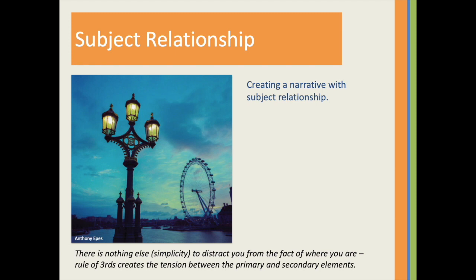In the image in front of us, it's about a place — London. There are just two key elements giving you the information you need to know where the image was taken. It's really simplicity. We have our main element on one third and then the wheel in the background, and that creates tension between the primary and the secondary element. We have subject relationship, we know where we are, and we've created a bit of storytelling. Rule of thirds, balancing elements, and subject relationship are three rules of composition that really work well together.